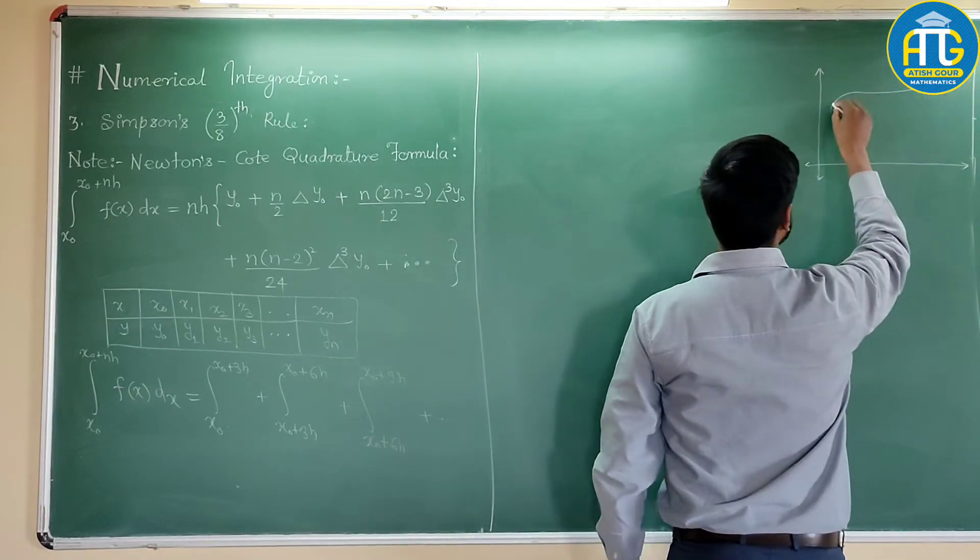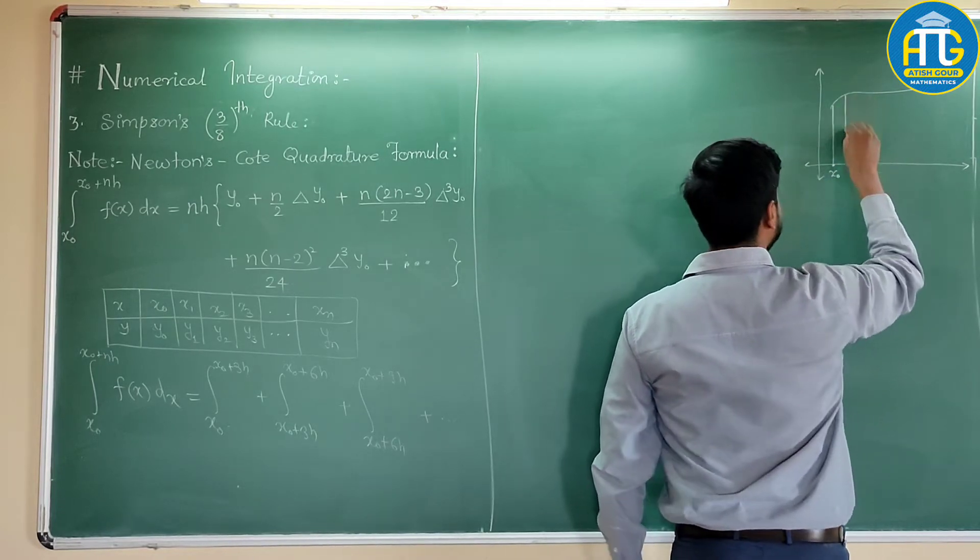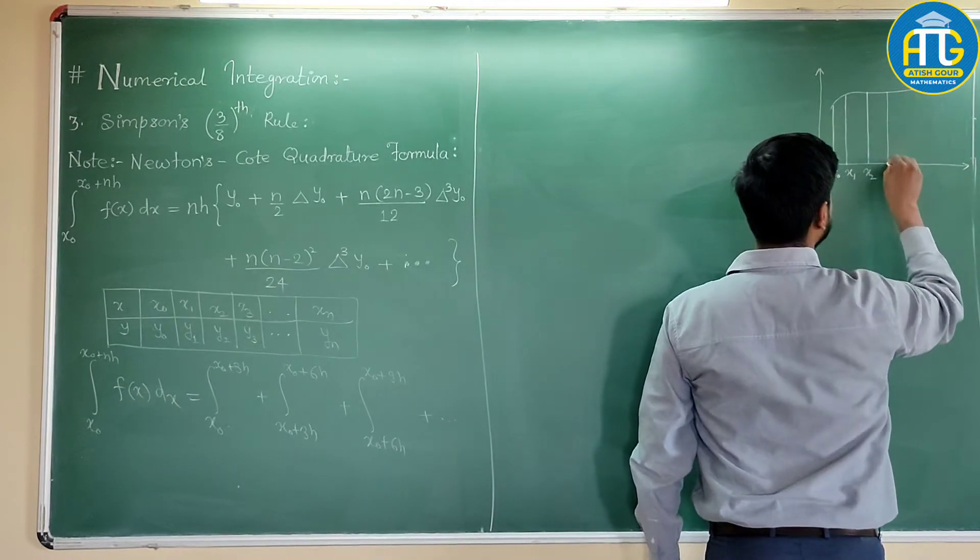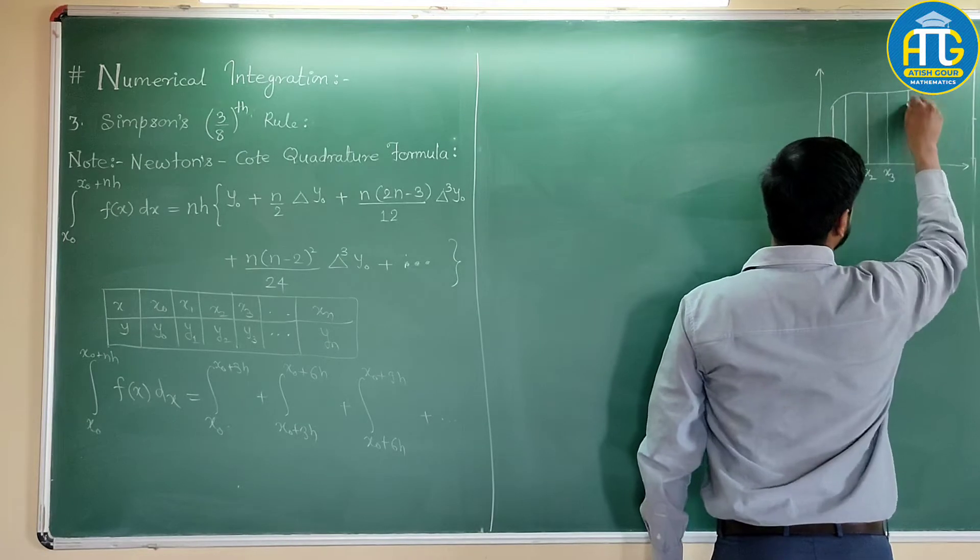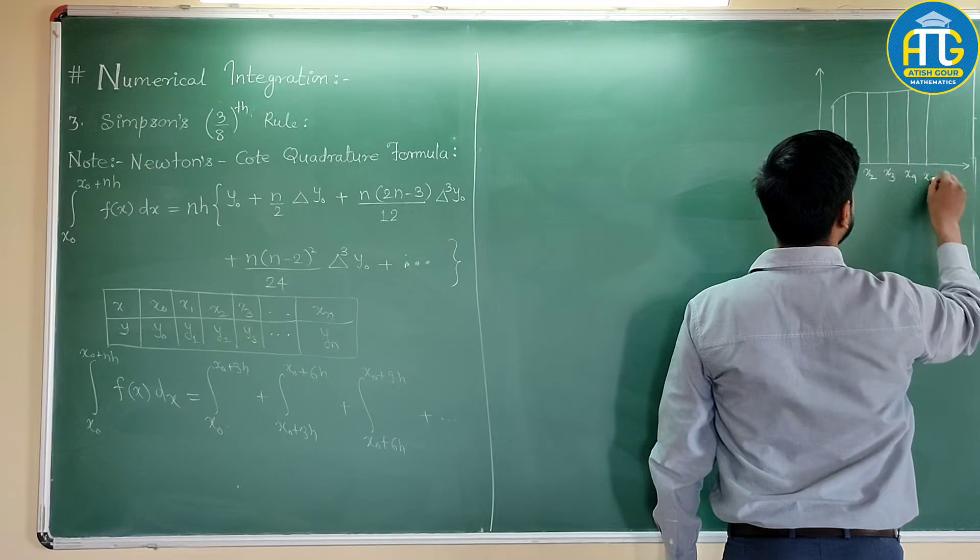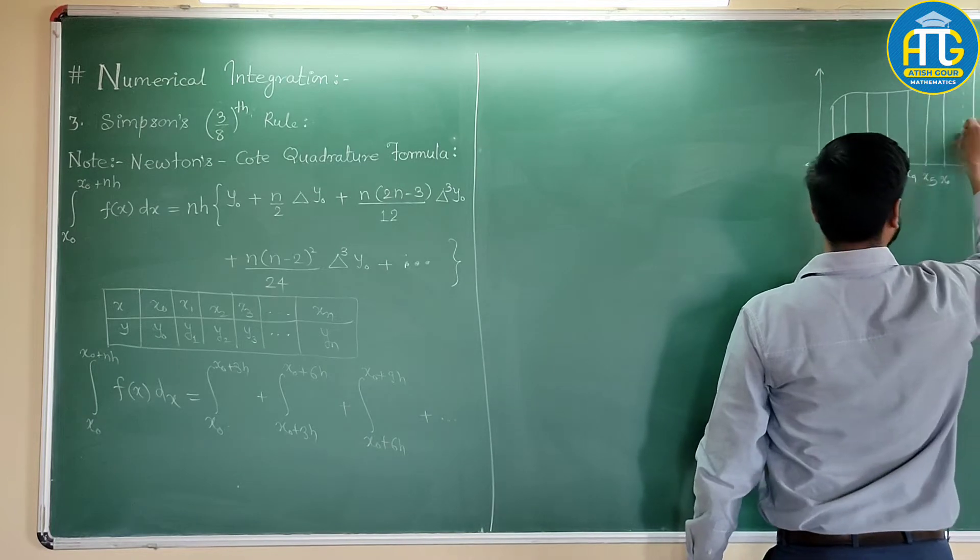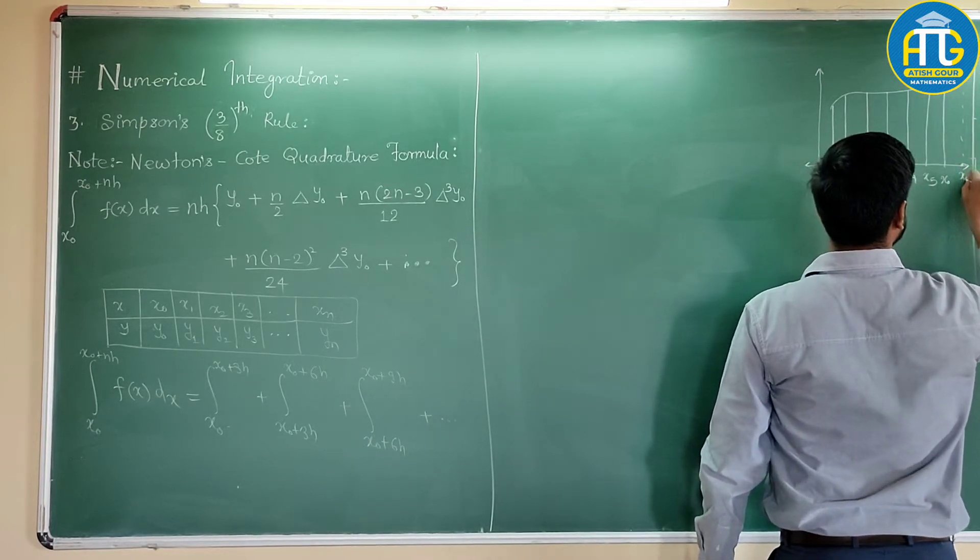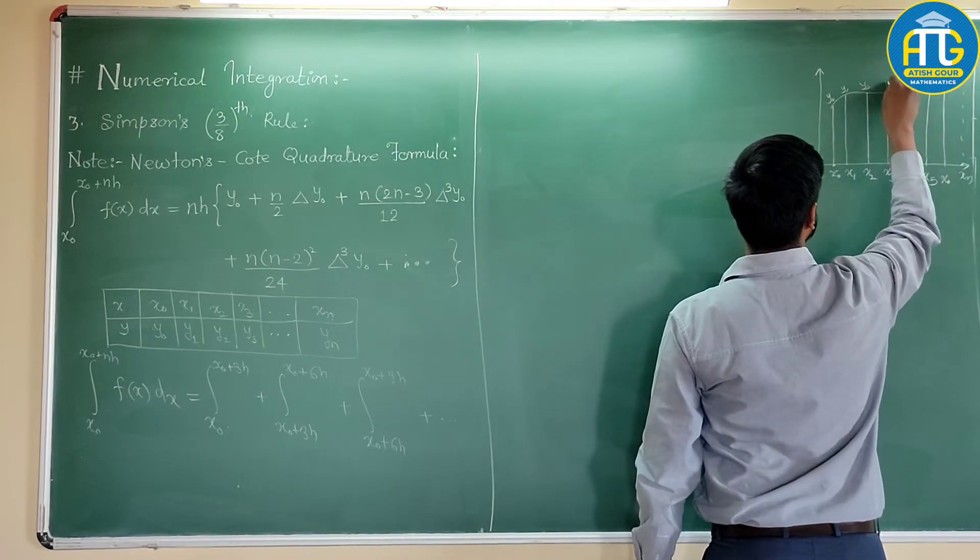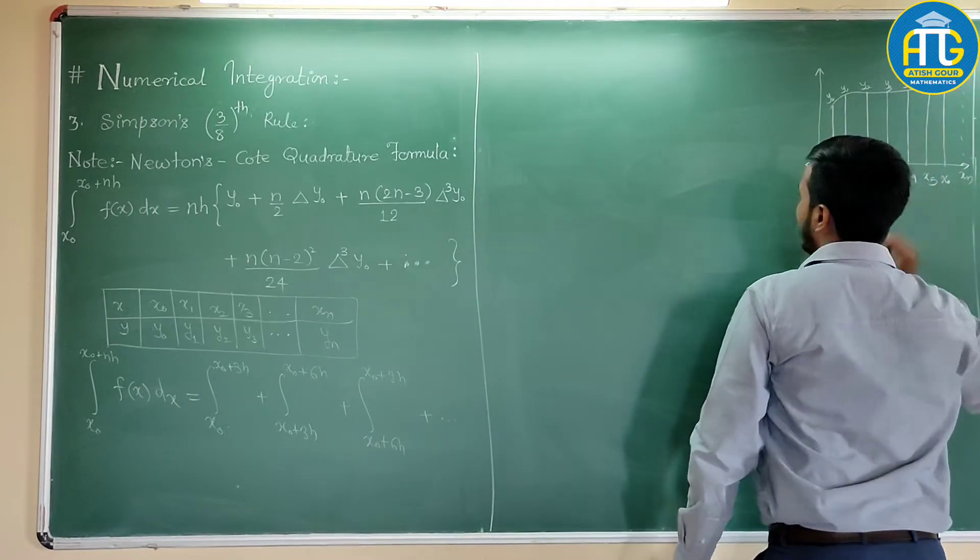So this is the function y is equal to f(x). Here you have the value x0, then you have x1, then you have x2, then you have x3, then x4, then x5, then x6, and then you have, say, here xn. And the corresponding values is y. So this is y0, y1, y2, y3, y4, y5, y6.